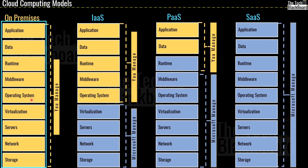On top of the virtualization layer, we have operating systems like Windows or Linux, middleware, and runtime. And then we have our application layer that primarily consists of a database and the front-end application. When it comes to your on-premises data center, it is your responsibility or the company's responsibility to maintain all these layers and all these components.